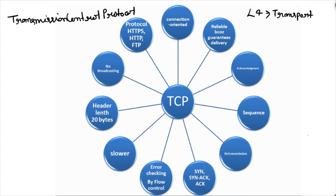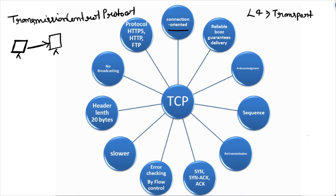The basic fundamental of TCP is that it is connection-oriented. In TCP, the user is ensured about the data transmission to the end user. So if a user is sending something to another user, TCP ensures that your data will definitely be transferred to that user. This is why TCP is connection-oriented.